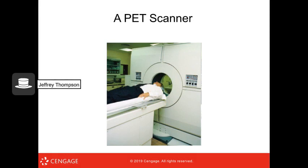Here's a PET scanner — not the kind for cats and dogs. It allows us to see where the radioactive tracer travels in the brain. It sounds alarming but the dose is very small — just enough to trace blood flow to active brain regions.